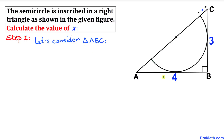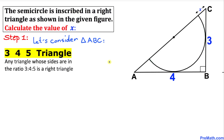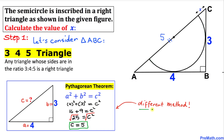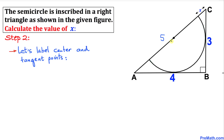Let's consider this right triangle ABC. We can see it has two legs — one leg is 4 units, the other leg is 3 units. Therefore, according to the 3-4-5 triangle theorem, the sides are in a ratio of 3, 4, and 5, meaning the hypotenuse is 5 units. We can also verify this by applying the Pythagorean theorem, which gives us c equals 5.